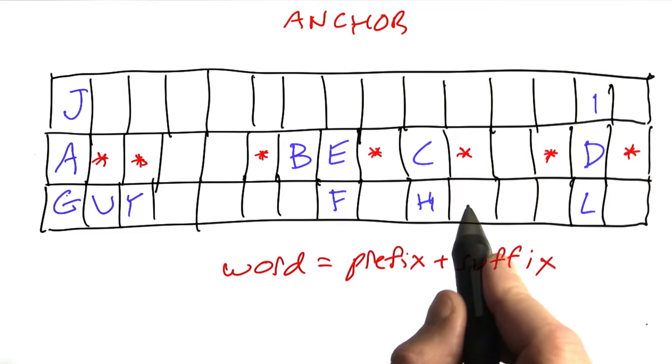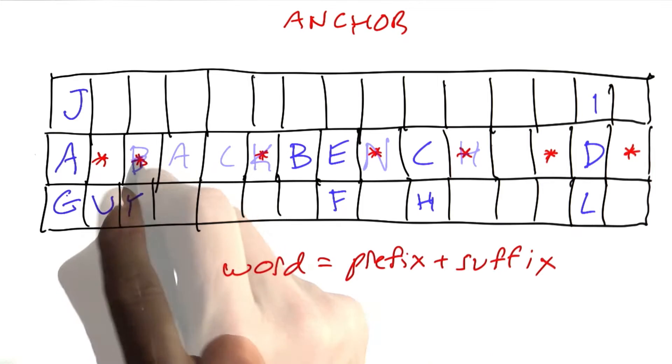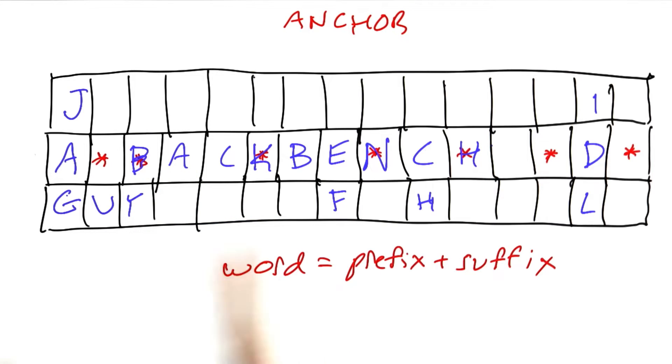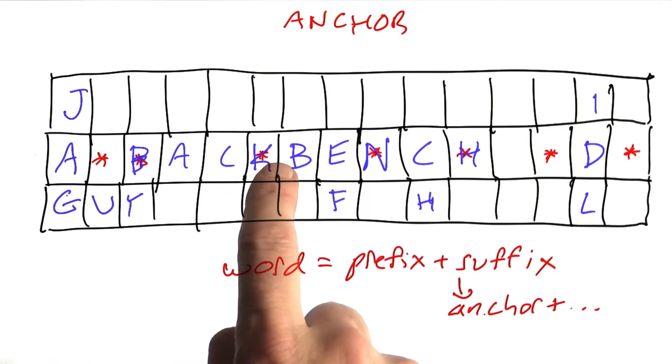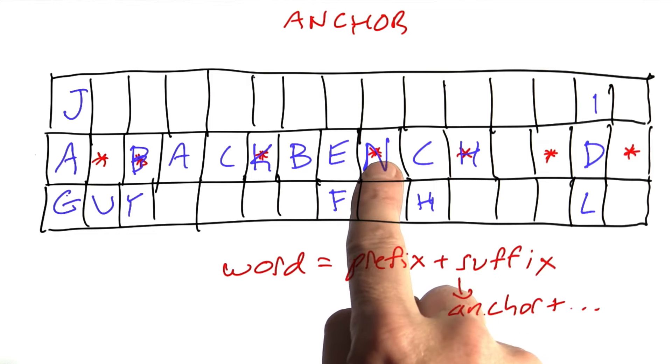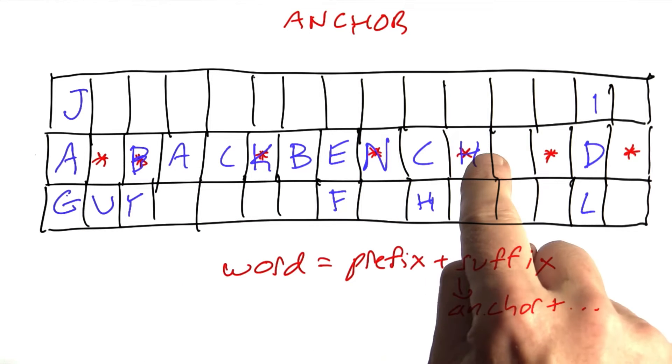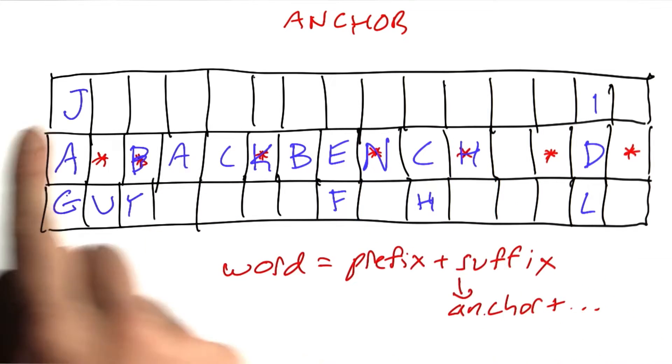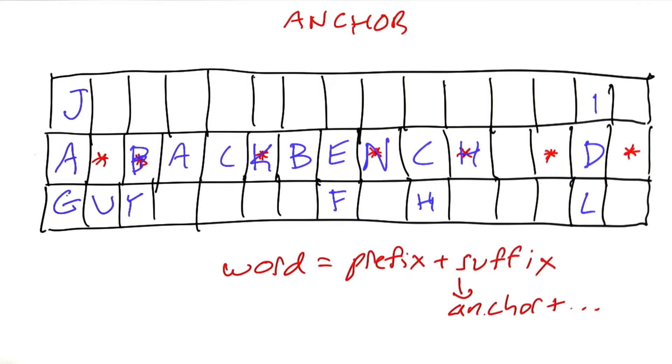Now here's a cool play that comes from the dictionary. Backbench is a word. And note that if we just have this rule of word equals prefix plus suffix where the suffix has to start with an anchor, then there'd be four possible ways of specifying this one move. We could anchor it here with no suffix. We could anchor it here with these three letters as a suffix. We could anchor it here with these letters as a suffix. Or we could anchor it here with all these as a suffix and just h as a prefix.